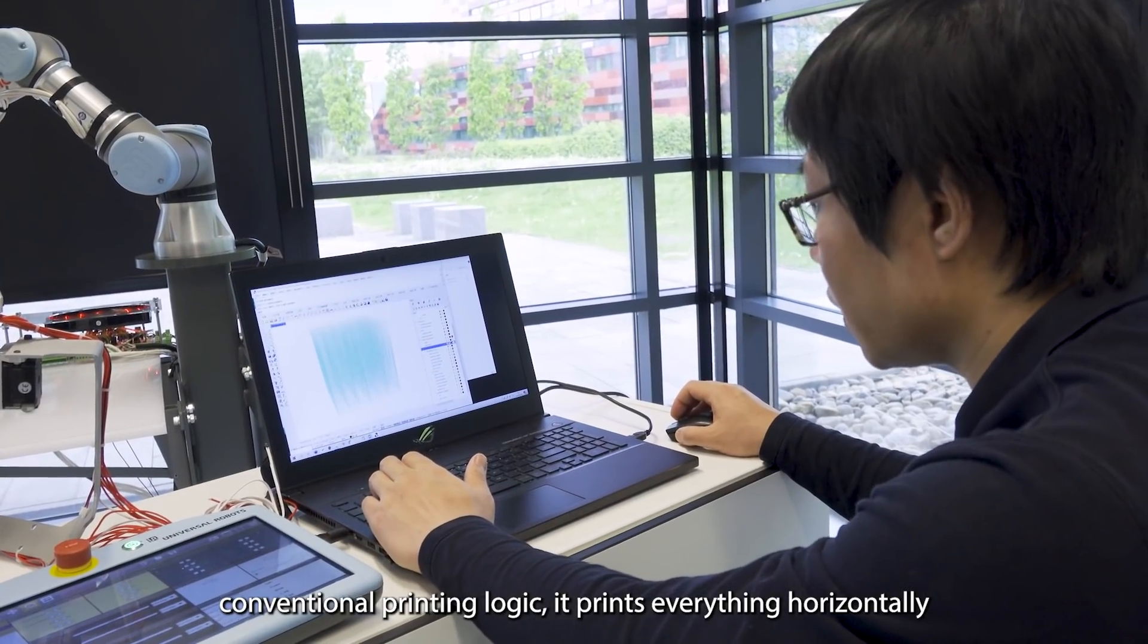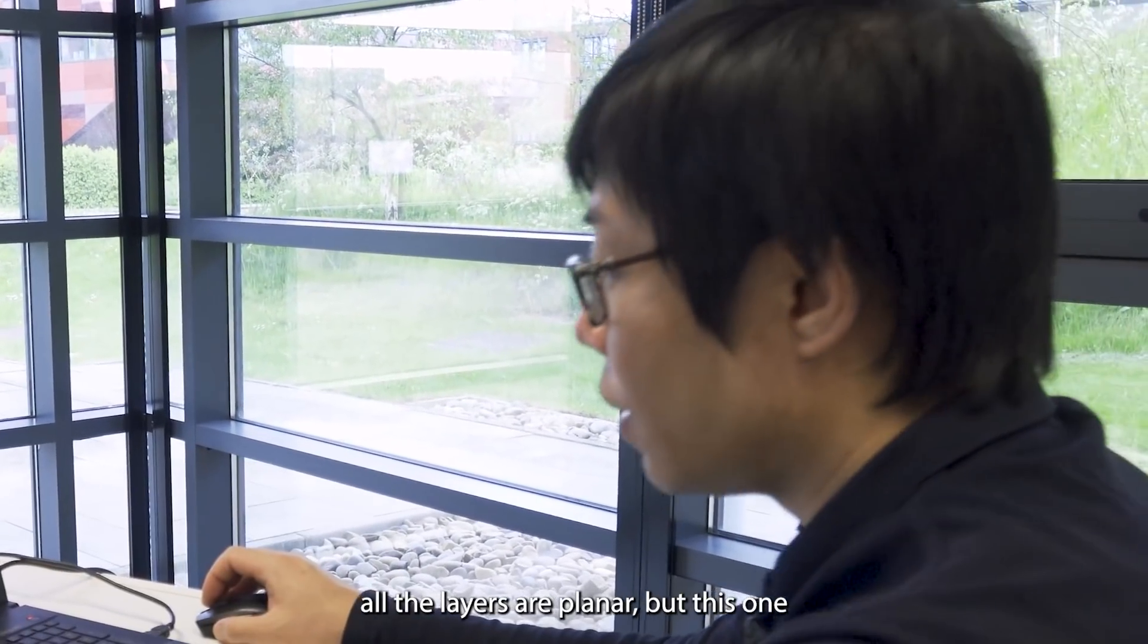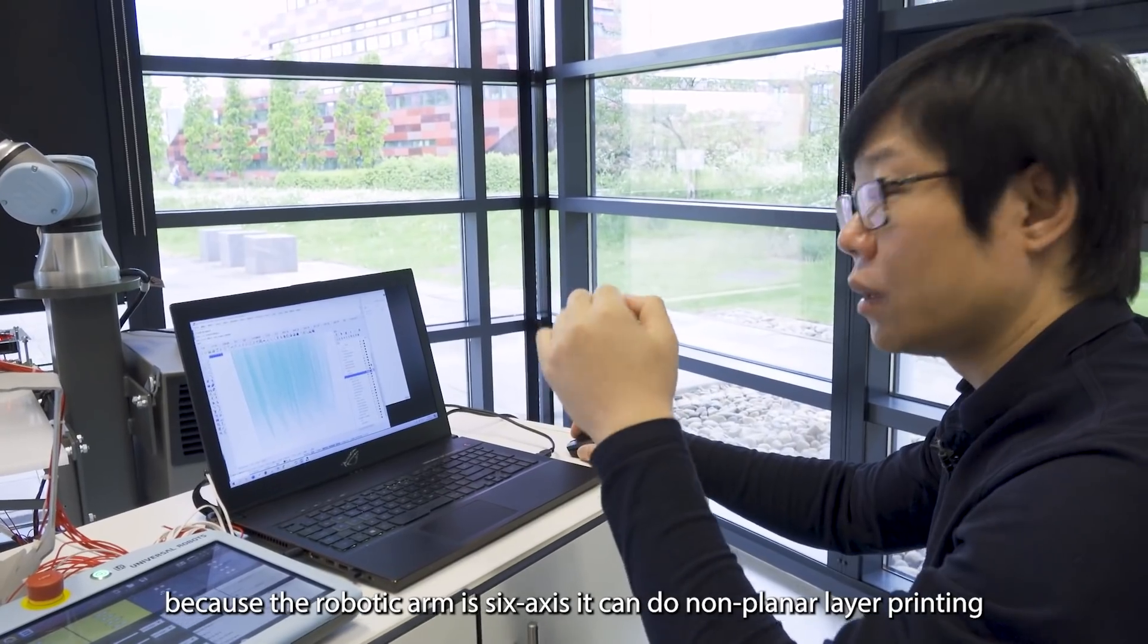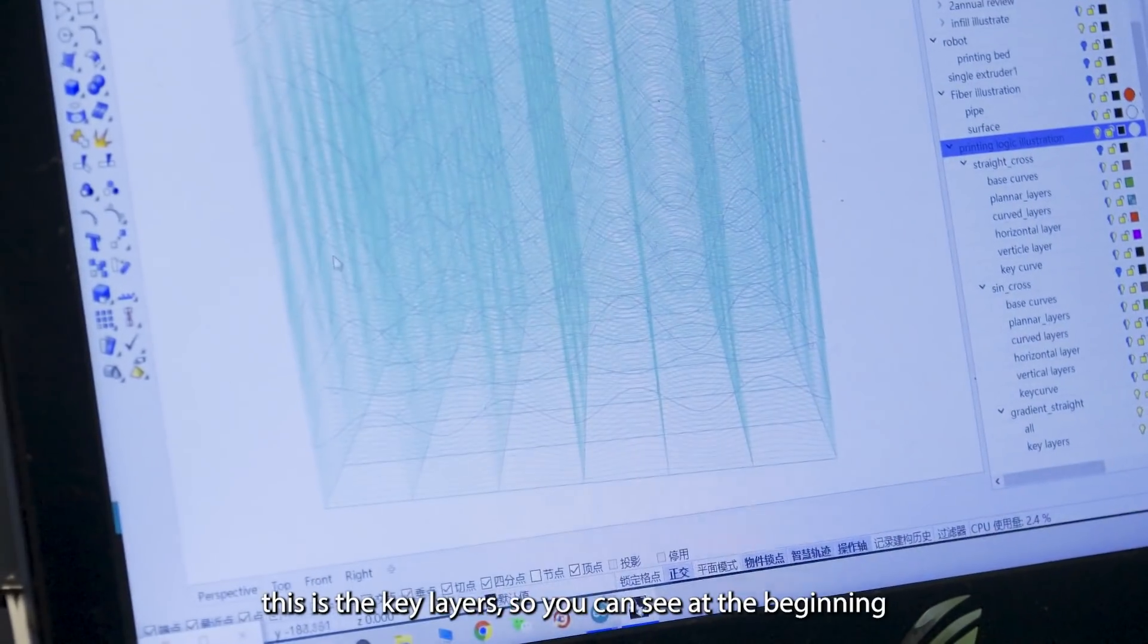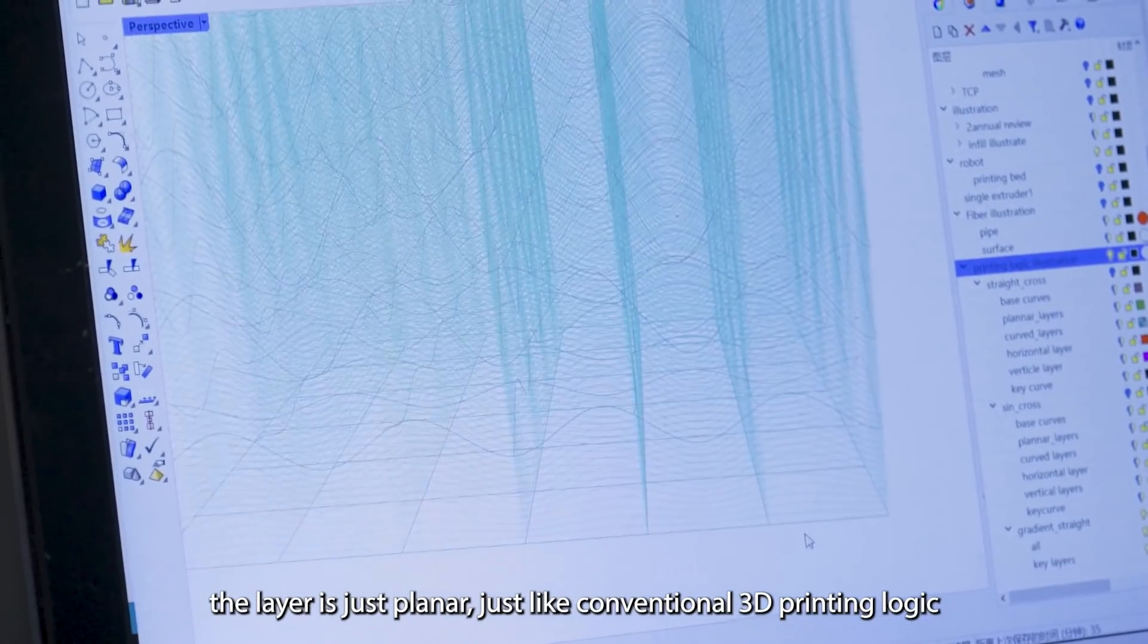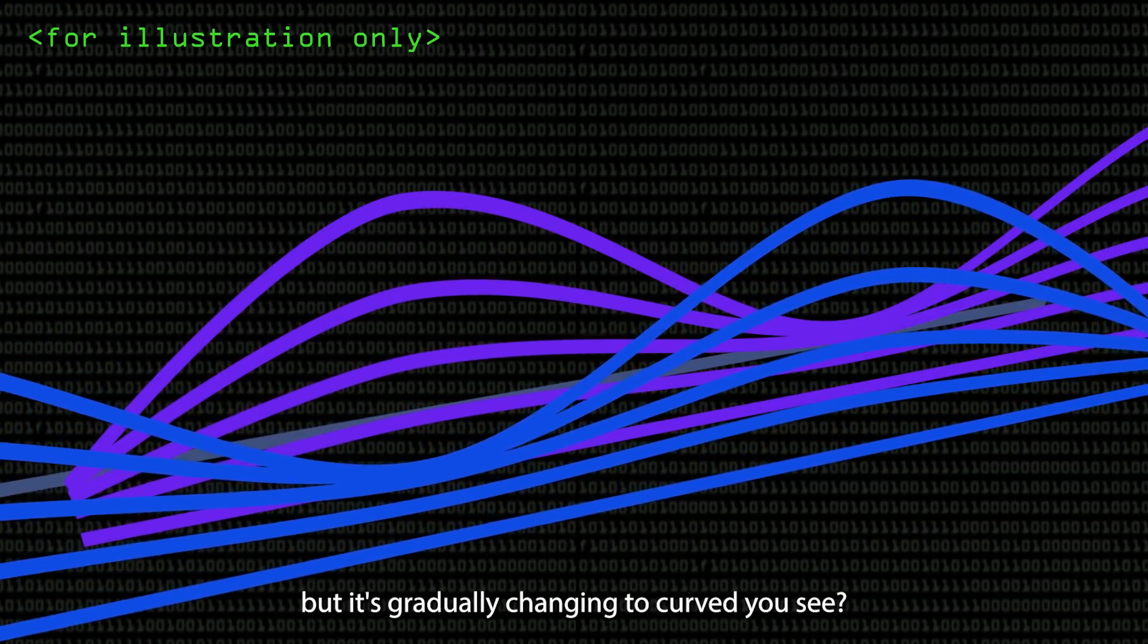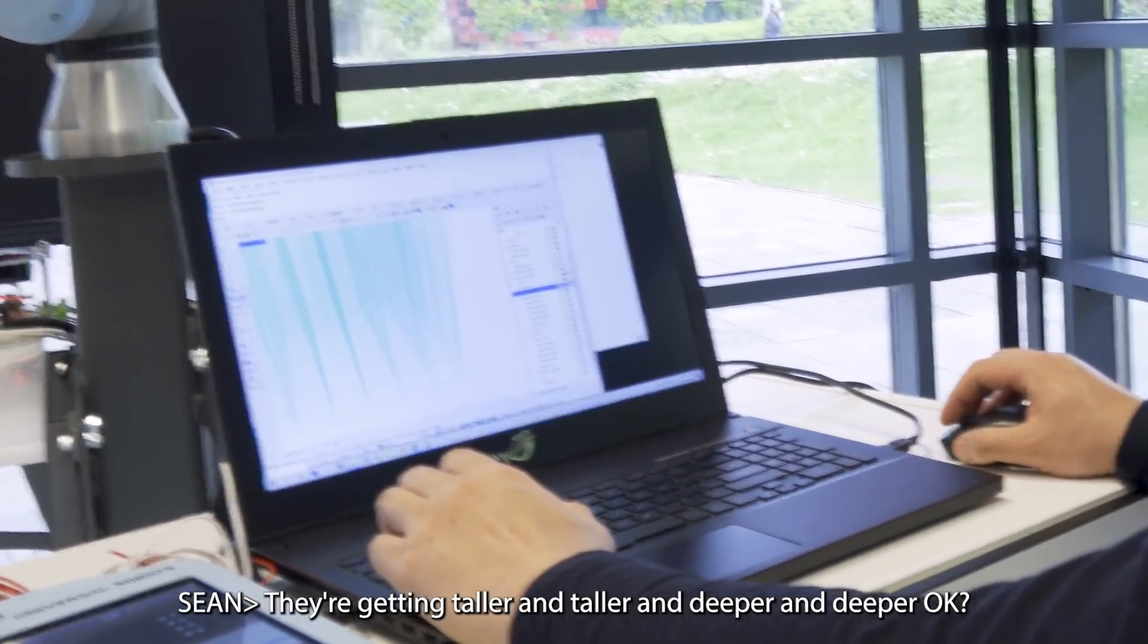The conventional printing logic is print everything horizontally. All the layers are planar. But for this one, the layers are waived. Because the robotic arm has six axes, it can do unplanar layer printing. This is the key layers. So you can see at the beginning, the layer is just planar, just like the conventional printing logic. It's flat. But it's gradually changing to curved, you see? The curl is going deeper and deeper. It's getting taller and taller and deeper and deeper.